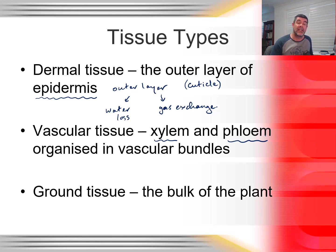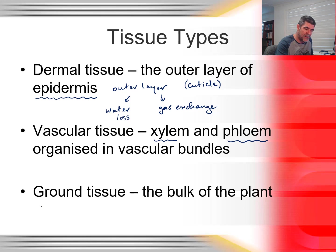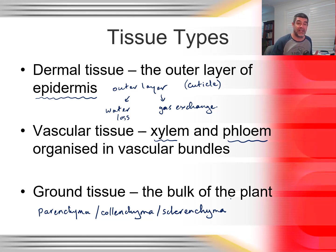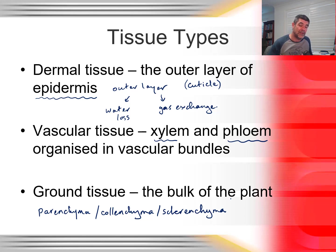The final type of tissue is really the bulk of the plant — ground tissue. The different types of ground tissue are often related to the deposition of different materials in the cell walls. We have things like parenchyma, colenchyma, and sclerenchyma — different types of cells that are part of ground tissue. This ground tissue extends from the dermal tissue around the outside all the way through to the centre of the plant, with the exception of the vascular tissue.